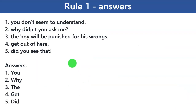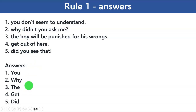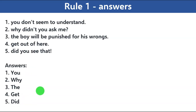Alright, let's look at the answers. For the first one, the word 'you' will be capitalized. For the second, the word 'why' will be capitalized. For the third, the word 'the' will be capitalized. For the fourth, the word 'get' will be capitalized, and for the fifth, the word 'did' will be capitalized. These are all the first words in the sentence and hence they will be capitalized.